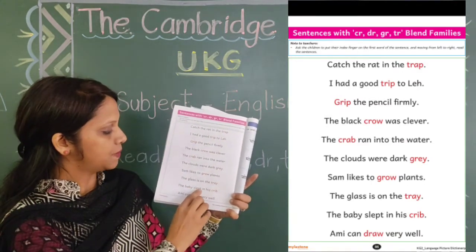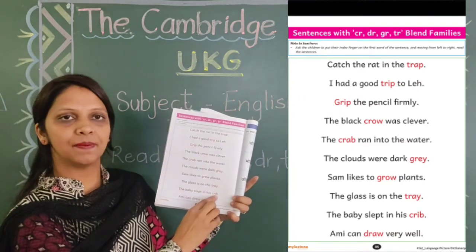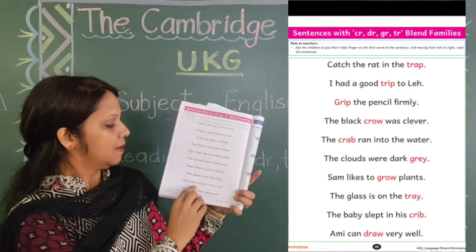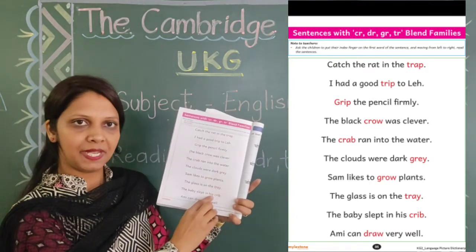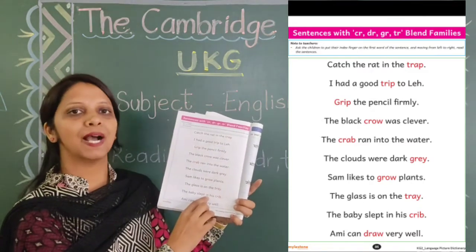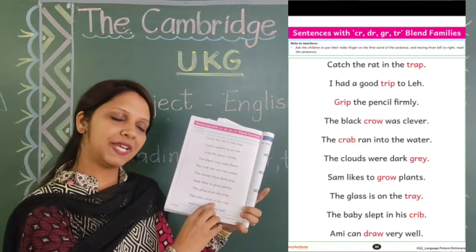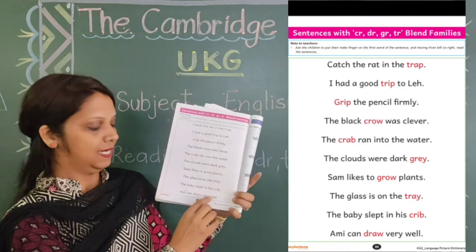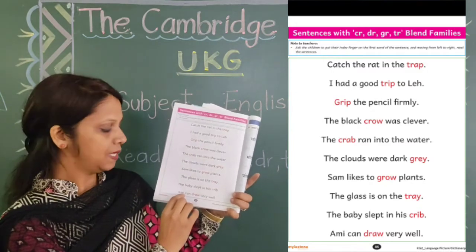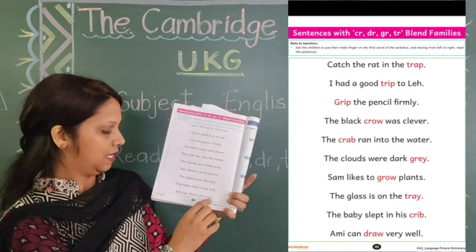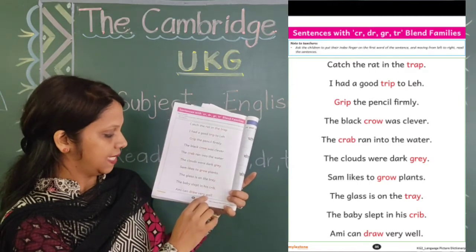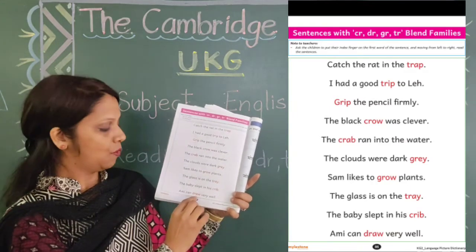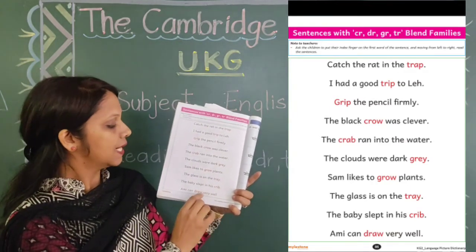The baby slept in his crib. The baby slept in his crib. Baccha paalne mein so gaya. Ami can draw very well. Last line is: Ami can draw very well. Ami bohut achche se draw kar sakta hai.